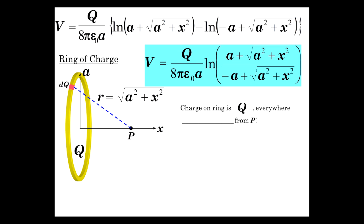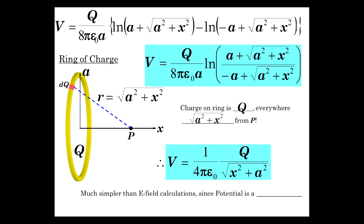So the charge on the ring is Q, and the entire Q is this distance from P. That would be the same potential at P. So potential is really easy to work with. V is simply kQ over r. So much easier than E-fields because we don't have to deal with the vector nature. The potential is a scalar quantity.